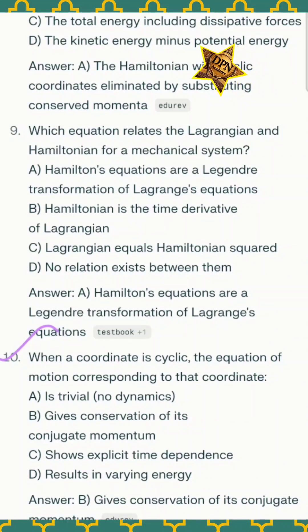Question number 10: when a coordinate is cyclic, the equation of motion corresponding to that coordinate - the correct option B, it gives conservation of its conjugate momentum. These are all the important MCQs from the topic Lagrangian, Hamiltonian, and cyclic coordinates.